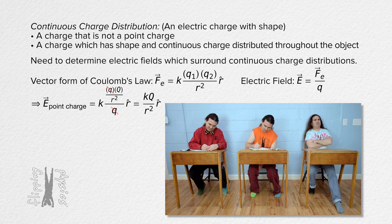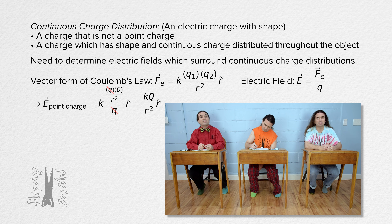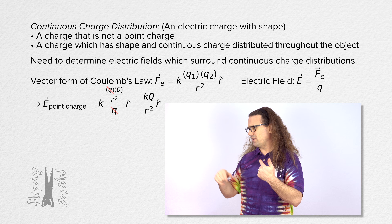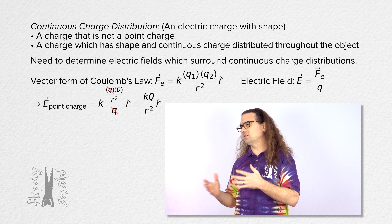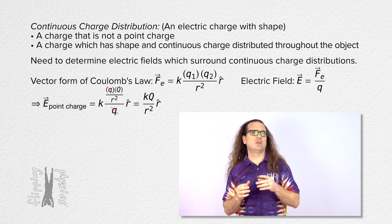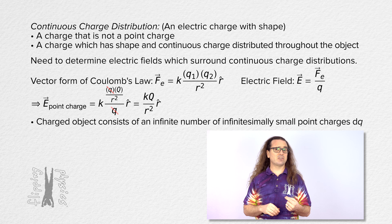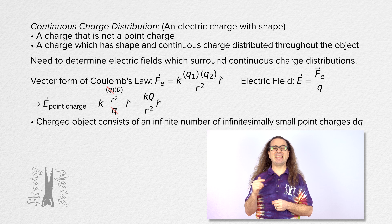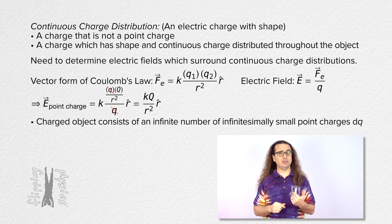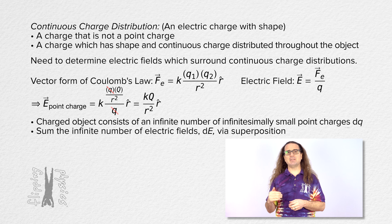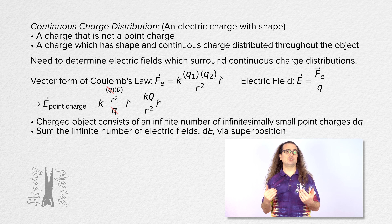But I still don't get what this has to do with the electric field caused by a continuous charge distribution. We are going to consider the charged object to be made up of an infinite number of infinitesimally small point charges dq and add up the infinite number of electric fields via superposition. It's an integral.